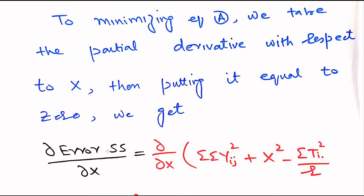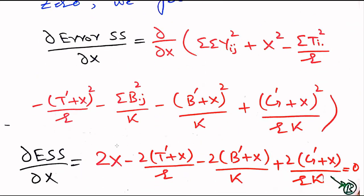To minimize the error sum of squares, we take the partial derivative with respect to x and set it equal to zero. We take the partial derivative of the whole error sum of squares with respect to x. Terms that do not include any x are treated as constants, and their derivative with respect to x is zero. Then for the partial derivative of x squared, we apply the power rule of differentiation.